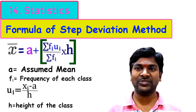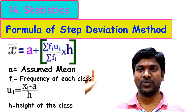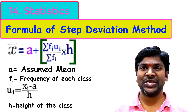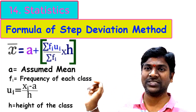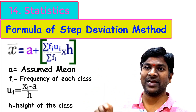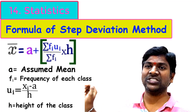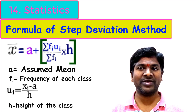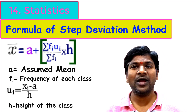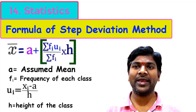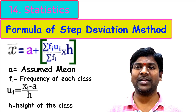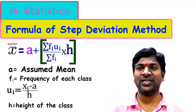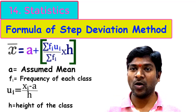To summarize the literal terms: 'a' is the assumed mean, 'fᵢ' is the frequency of the classes, uᵢ = (xᵢ − a) / h where xᵢ is the mid value, 'a' is the assumed mean, 'h' is the height of the classes, and Σfᵢ is the sum of frequencies or number of observations. This is the formula to find the mean of classified data using step deviation method.